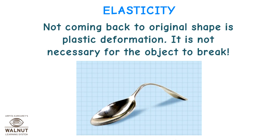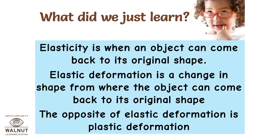Not coming back to the original shape is plastic deformation — it is not necessary for the object to break. What did we just learn? Elasticity is when an object can come back to its original shape. Elastic deformation is a change in shape from which the object can return to its original shape. The opposite of elastic deformation is plastic deformation.